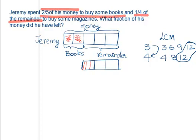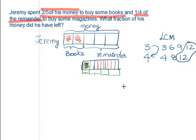Each original unit is now split into 4 sub-units, giving 12 sub-units across the remainder. To divide into 4 equal parts, each part should have 3 sub-units. So the first 3 sub-units become 1 part, the next 3 become the second part, and the last 3 become the third part — successfully dividing 3 units into 4 equal parts.